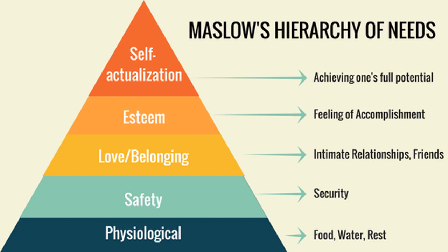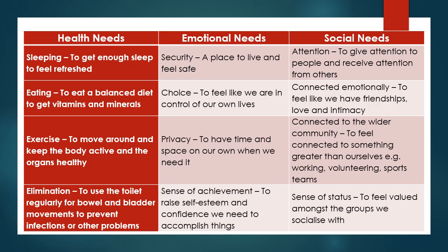In an ideal world, it would be absolutely amazing if everybody were to achieve these five different needs, starting from the bottom and working the way up. But actually in real life it doesn't always work like that. This next slide supports similar things we talked about on the last one, and it's looking at health needs, emotional needs and social needs.